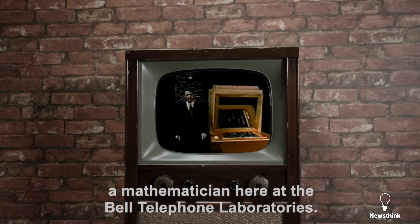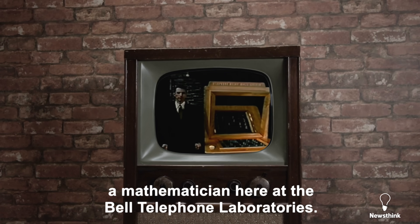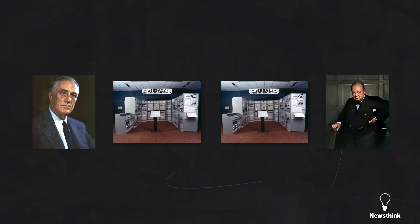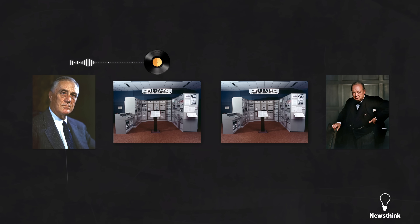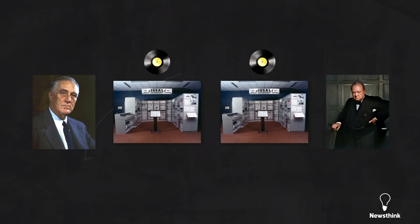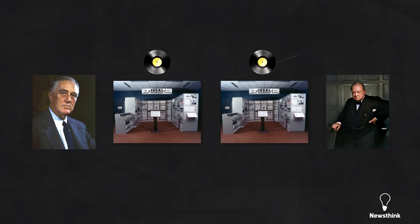One of the most critical projects he worked on at Bell Labs was Sig Sally, a speech scrambling system used by President Roosevelt and Prime Minister Churchill to prevent the Nazis from eavesdropping. It worked by scrambling Roosevelt's voice with a random noise key recorded on a vinyl record, so that anyone intercepting the signal heard only static. At Churchill's end, the Sig Sally machine with an identical vinyl record subtracted the noise, restoring Roosevelt's voice. Since each noise key was used only once and destroyed, Sig Sally was mathematically unbreakable.